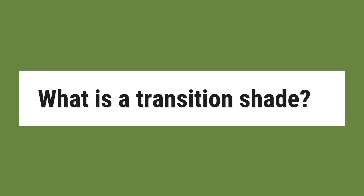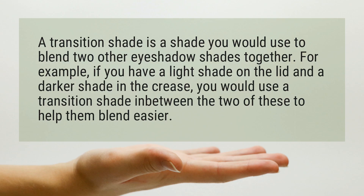What is a transition shade? A transition shade is a shade you would use to blend two other eyeshadow shades together. For example, if you have a light shade on the lid and a darker shade in the crease, you would use a transition shade in between the two to help them blend easier.